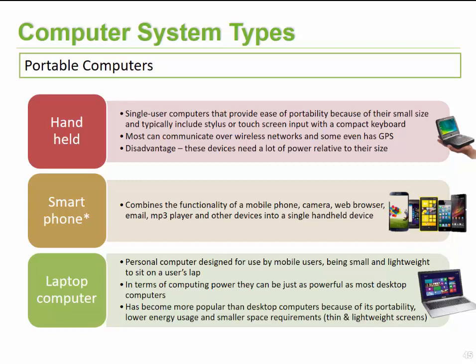On certain versions, they would only give you a stylus without a touch screen. On others, you might find only a touch screen, and on others, a combination of a small keyboard, touch screen, and stylus. These would typically communicate over wireless networks and in certain cases would also include GPS capabilities. The disadvantage was that they required a lot of power, and at that stage we didn't have the battery or backup capabilities that we have nowadays.